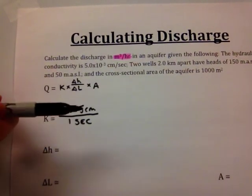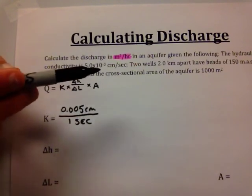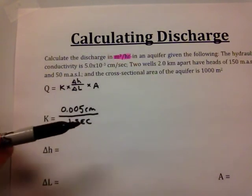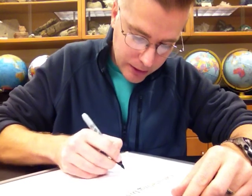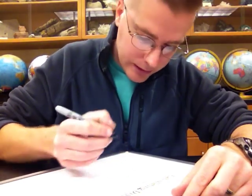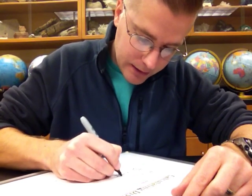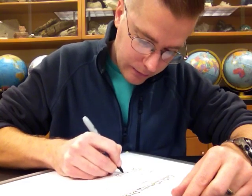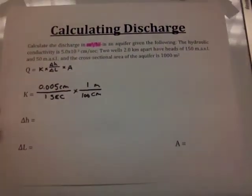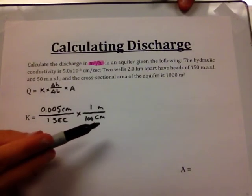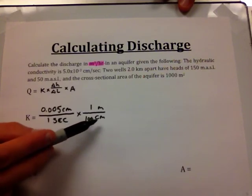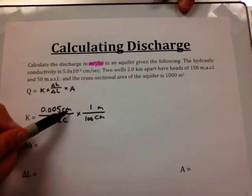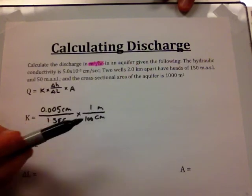We set up stoichiometry to convert units. First, convert the distance: centimeters are on top in the first fraction, so they go on the bottom of the next fraction. We know there are 100 centimeters in one meter, so we write one meter over 100 centimeters. The centimeters cancel, and our distance unit becomes meters.